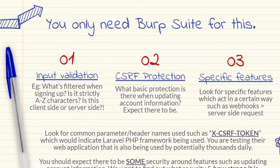You should expect there to be some security — for example, when editing your account information or changing your email, the website should protect against CSRF. But how have they done it? Even if it has protection, write some notes down — especially if you're new — on how they've protected against it. Because as you continue going through the site, you may notice different CSRF protection has been used. You might see a parameter named CSRF-token in one place and then just 'token' in another part, looking a bit different. Then you can start thinking: why is this different? Are they not using the same library throughout? Is this different code, new code, old code? You can start asking questions.